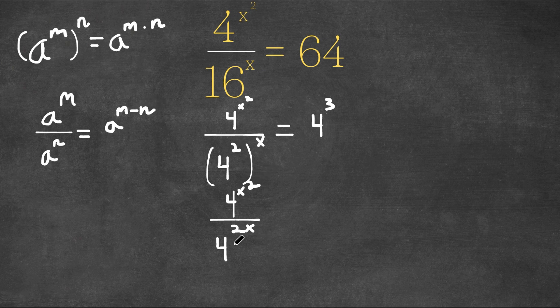So 4 to the power of x squared over 4 to the power of 2x. This is the same thing as 4 to the power of x squared minus 2x.